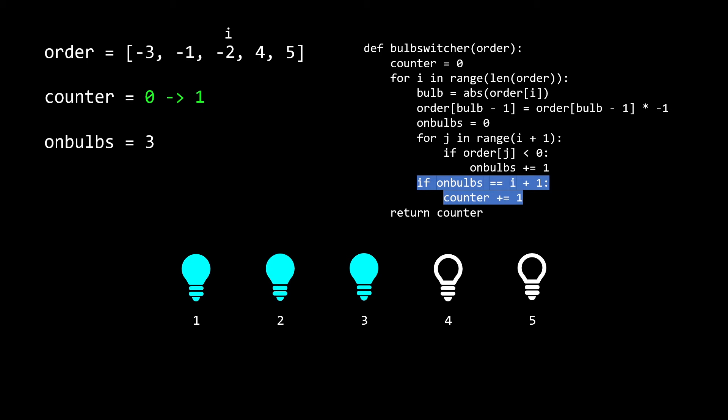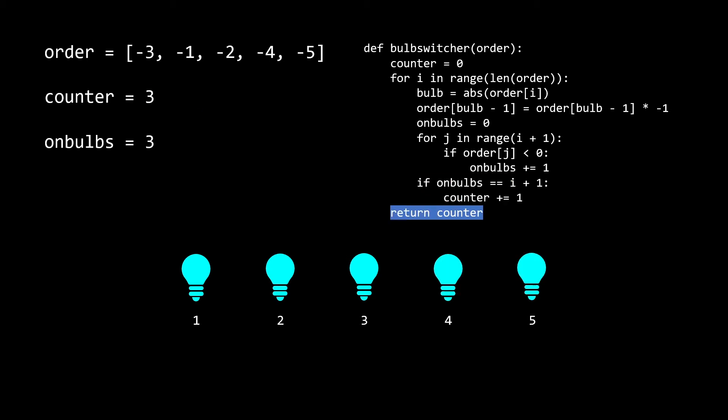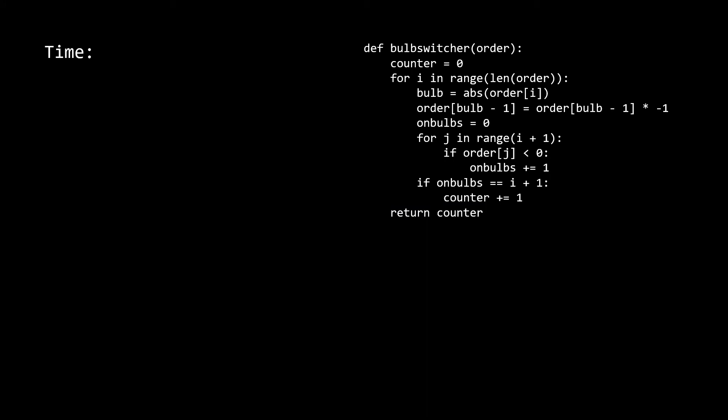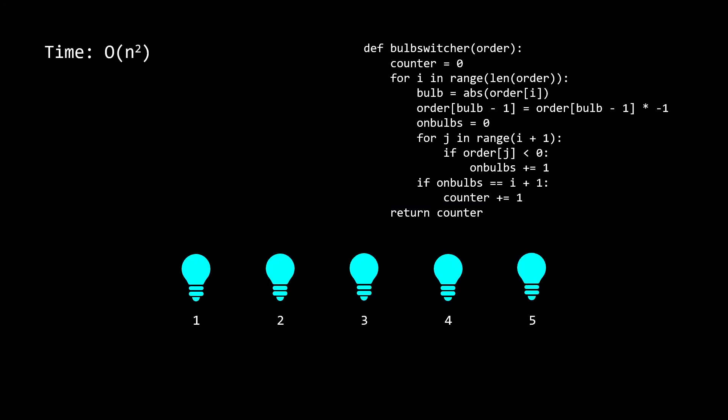Hopefully you get the idea of this solution. When the algorithm finishes running, all the numbers will be marked negative and we return the counter, which holds the value of 3. For time complexity, the outer i loop runs n times, and the inner j loop runs 1 time on the first iteration, 2 on the second, and so on up to n — this is a quadratic pattern, giving us O(n²) overall. For space, we aren't using any extra space, so that remains constant O(1).